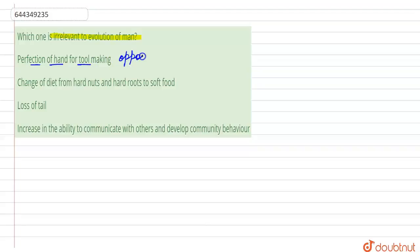the thumb became an opposing thumb. That means it came opposite to the fingers of the hand, and then the grasping also increased.